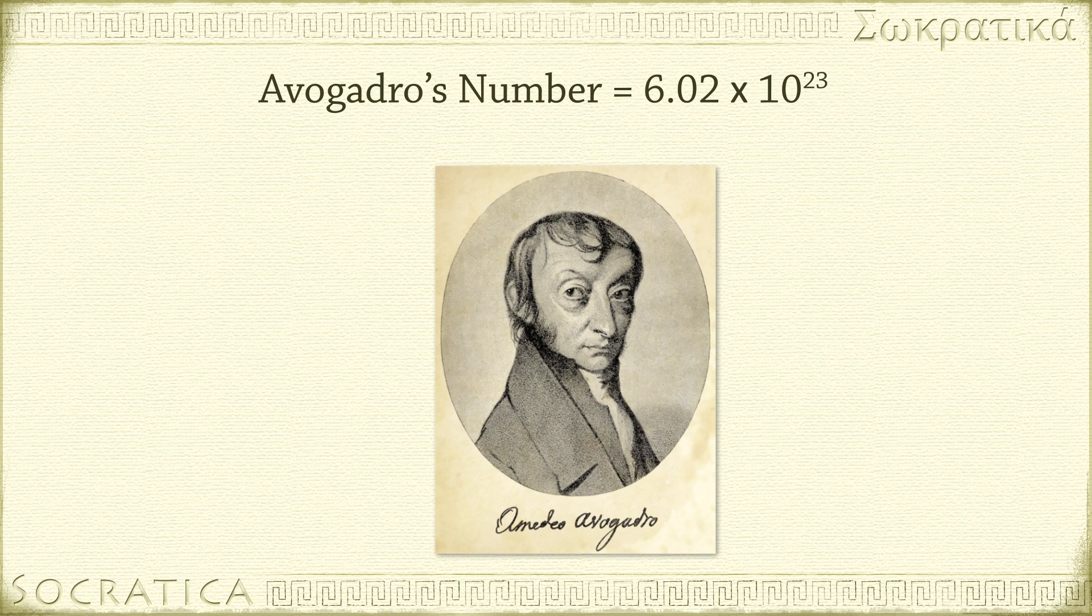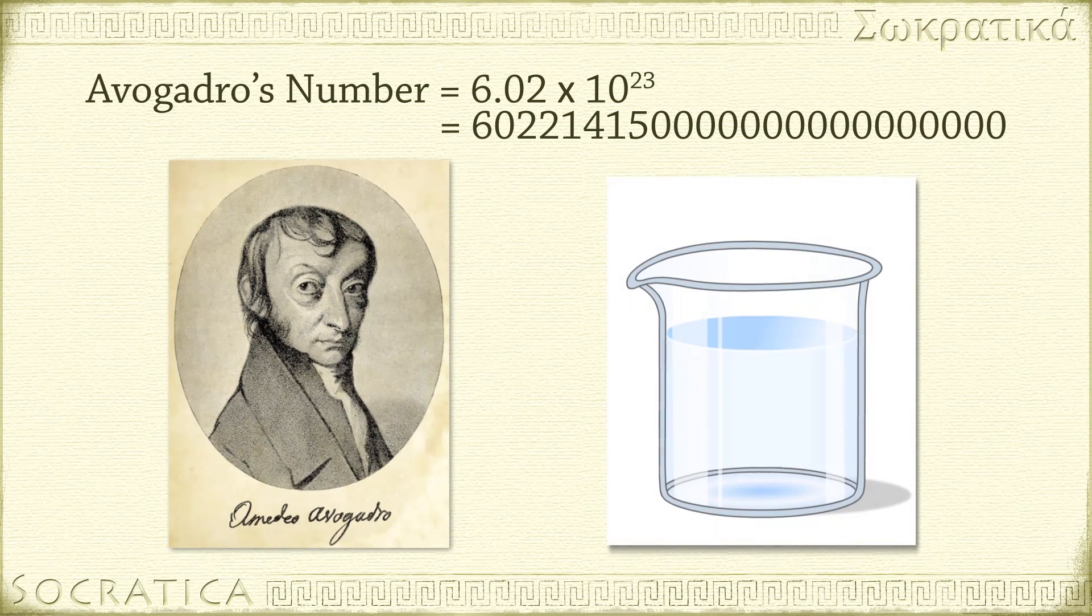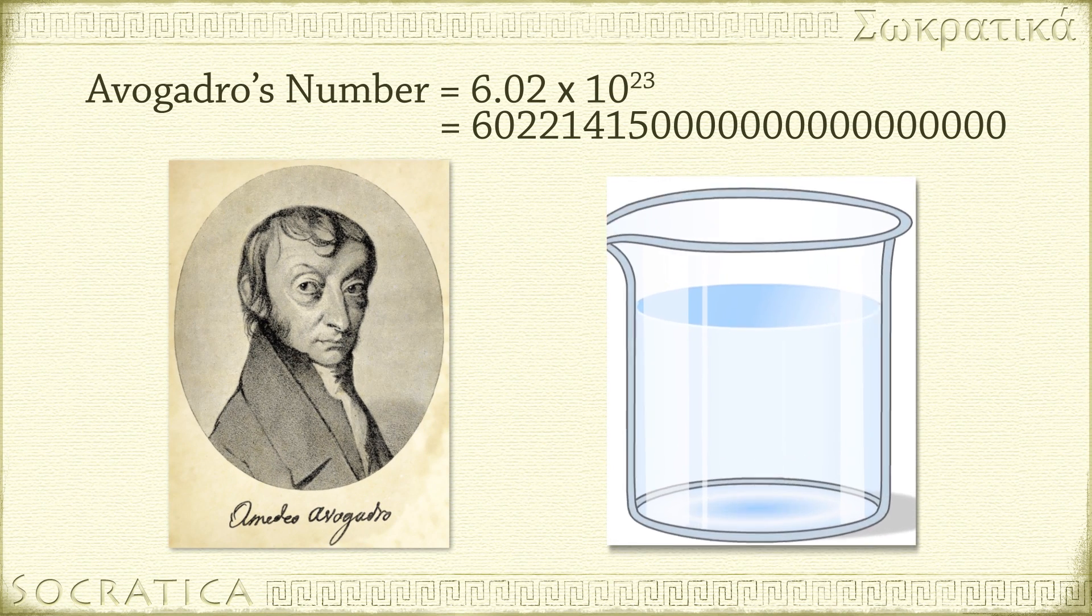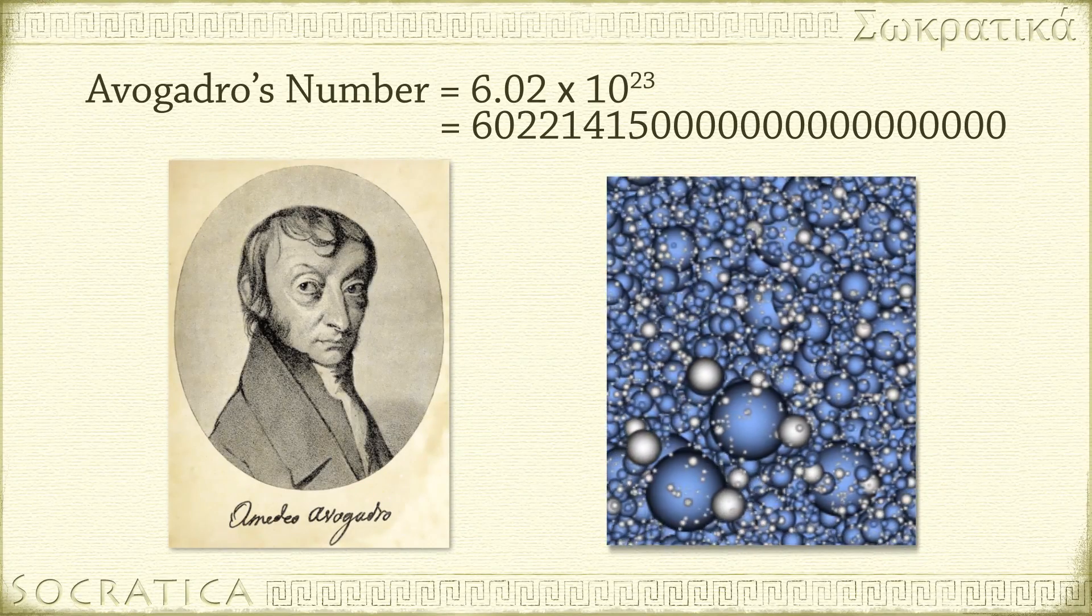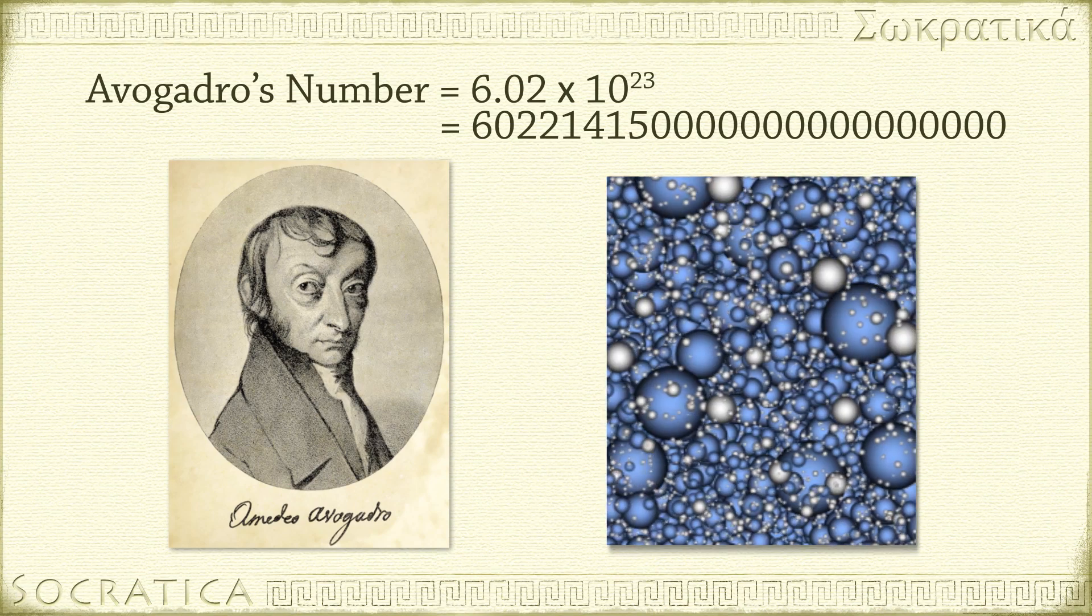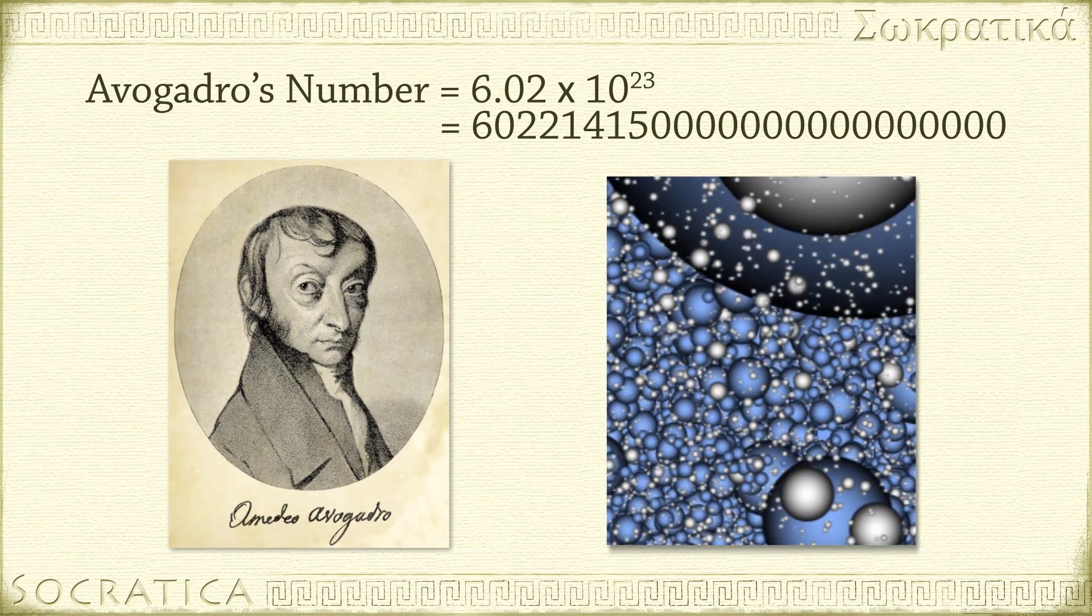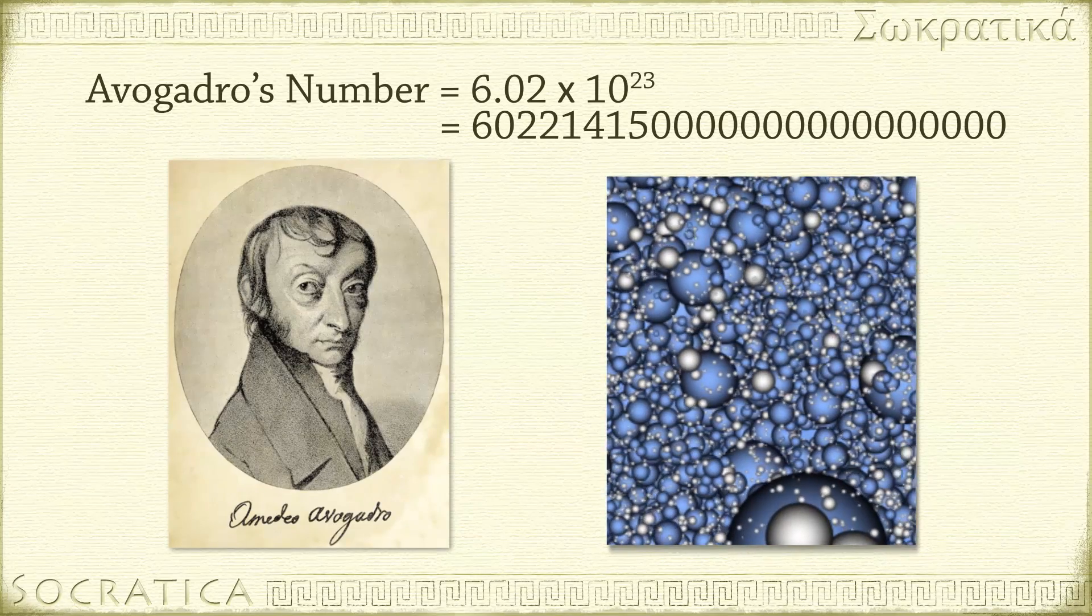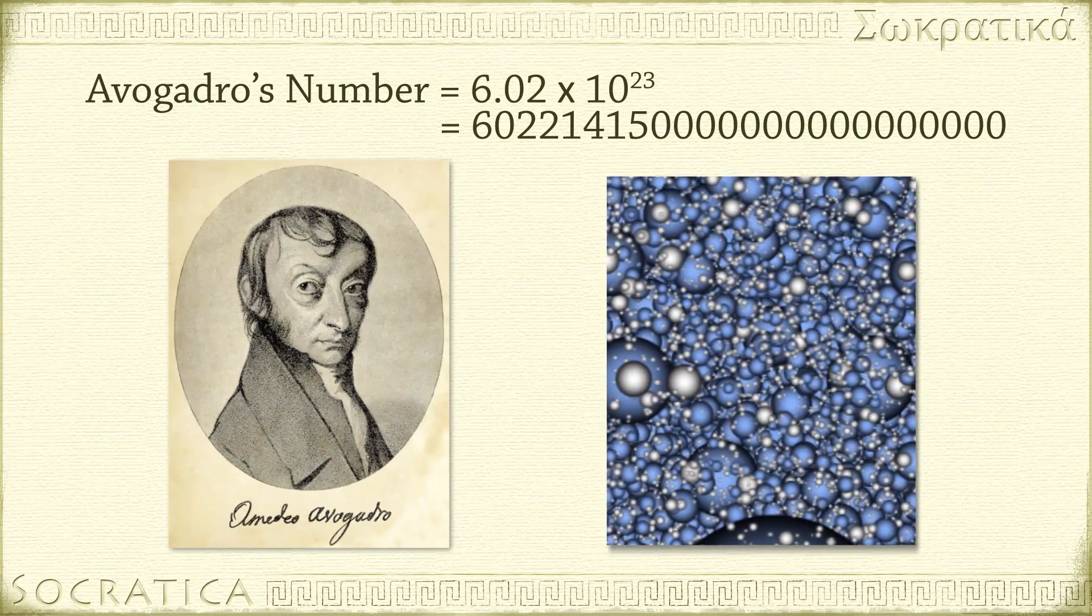They must have thought pretty highly of Avogadro, because Avogadro's number is huge. It's used in chemistry because the particles in chemistry - atoms, ions, molecules - are so tiny that there will be a massive number of particles in any appreciable amount of a substance. If we're going to talk about the number of atoms on the head of a pin, or the number of molecules of a liquid in a beaker, we need a really big number.